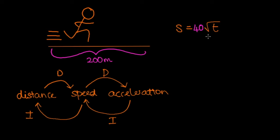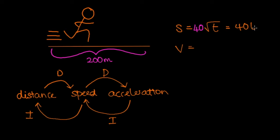Let's use this model to estimate the speed of the runner as he passes the finish line. From the diagram we know that to find speed we take the derivative of distance as a function of time. So taking the derivative of the distance gives us the speed, and we're differentiating 40 root t, which is equivalent to 40t to the half.